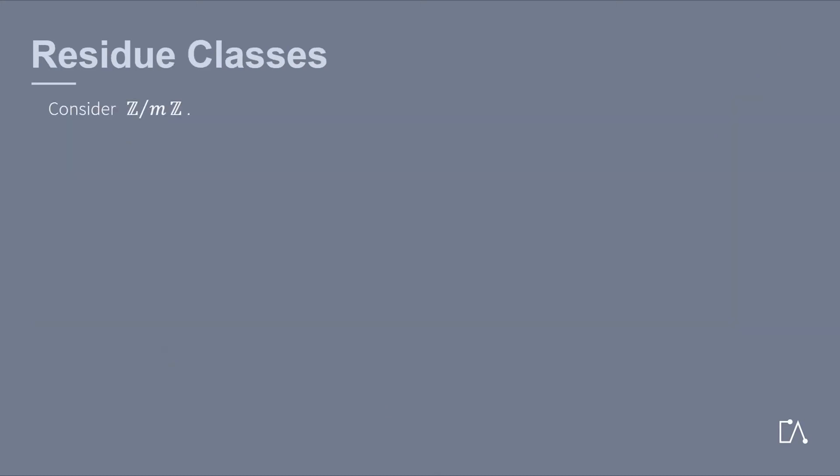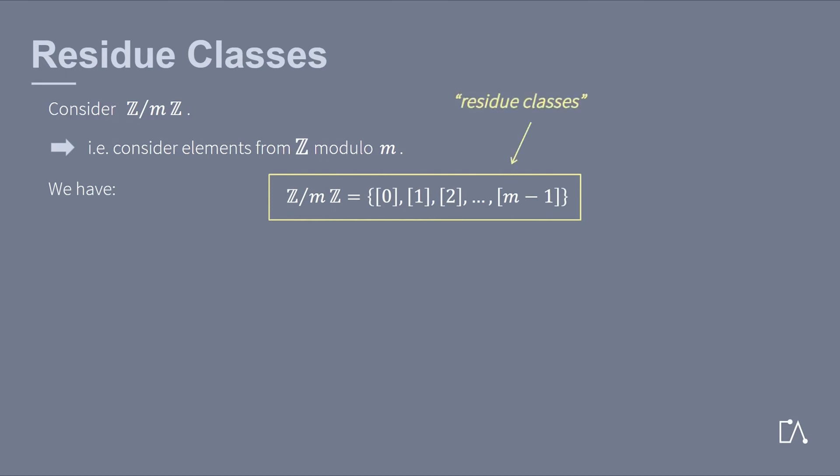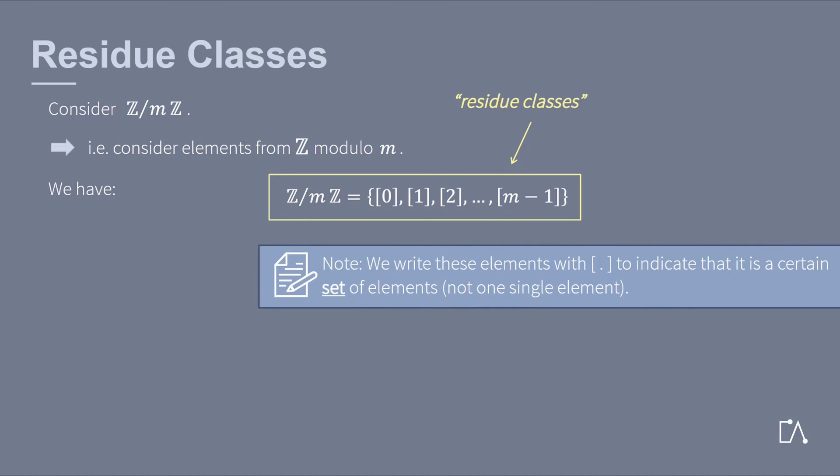Consider the residue class ring Z/mZ. This means we consider integers, but modulo m. Z/mZ contains certain sets of elements, the so-called residue classes, which are written in square brackets. Only the residue classes from 0 to m minus 1 are contained, since 0 and m, as well as 1 and m plus 1 are each equal modulo m.